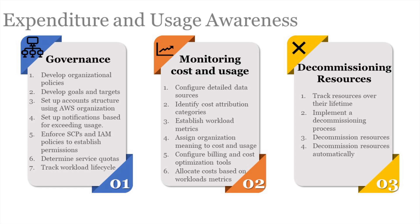Identify Cost Attribution Categories: during the various stages of a workload lifecycle — developing, testing, production, and decommissioning — you must allocate costs to them. Different accounts can be created for learning and staff development to segregate costs rather than attributing them to general IT costs. Establish Workload Metrics: determine how workload output impacts performance and business success, helping determine workload efficiency and cost per business output. Assign Organization Meaning to Cost and Usage: by assigning tags to each resource such as an EC2 instance or S3 bucket, you can relate them to meaningful organizational information in Cost and Usage Reports. Tags can cover cost centers, application names, projects, and owners.